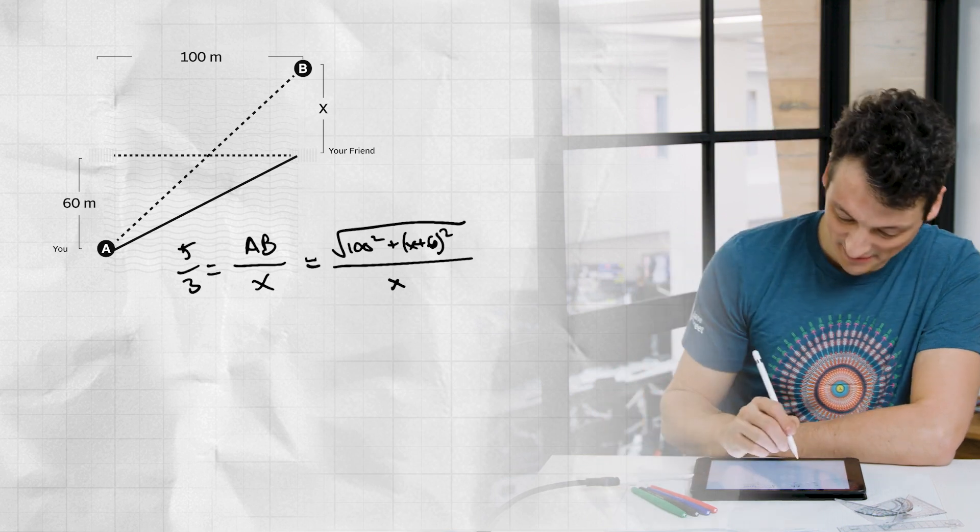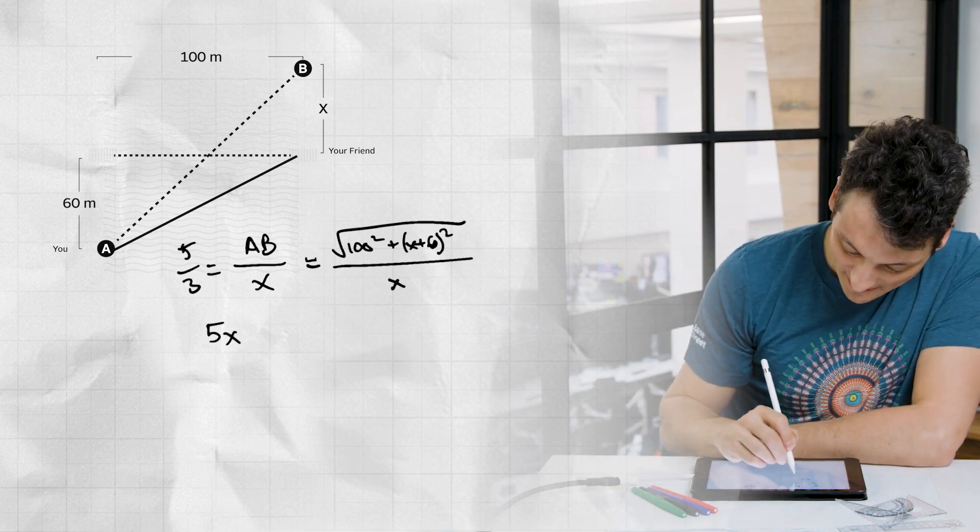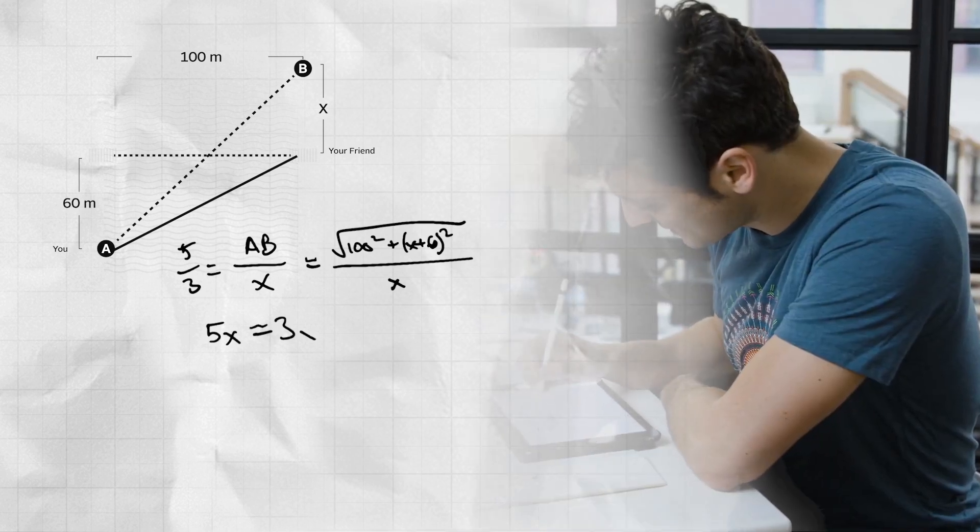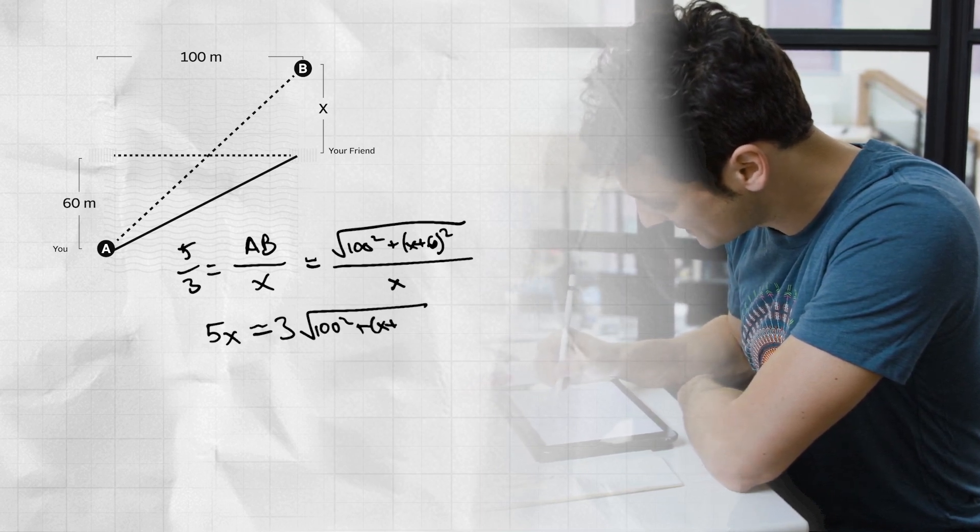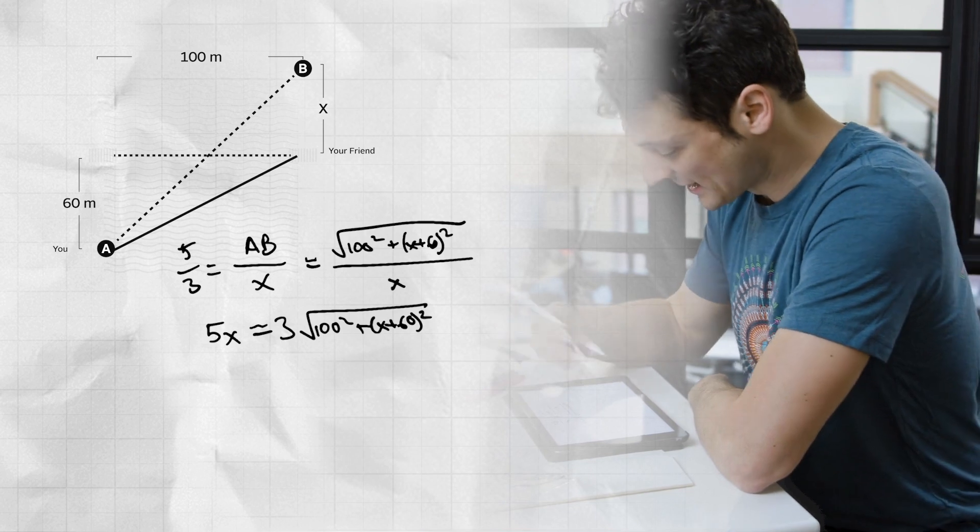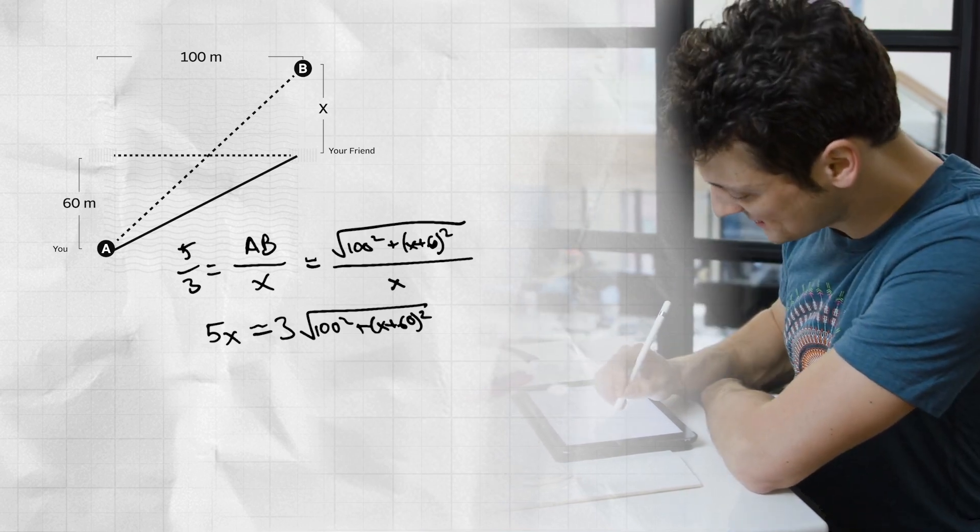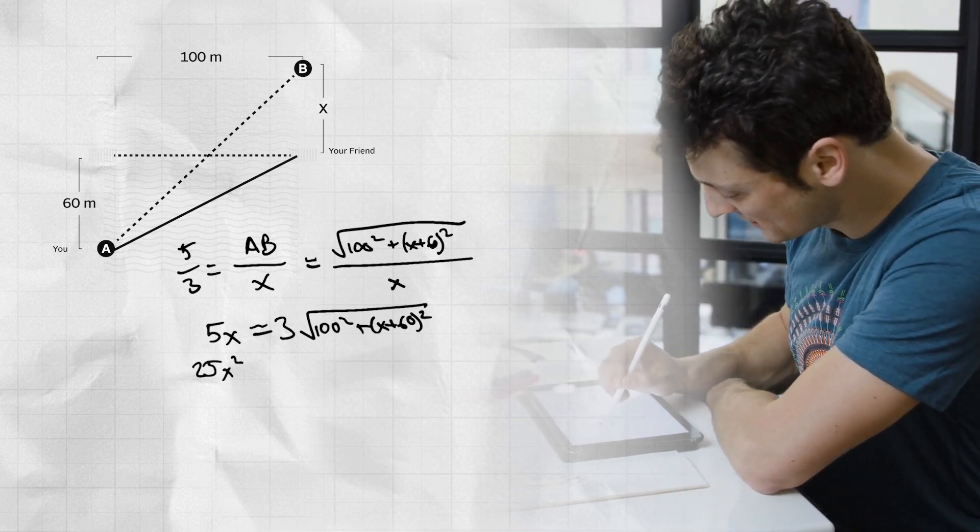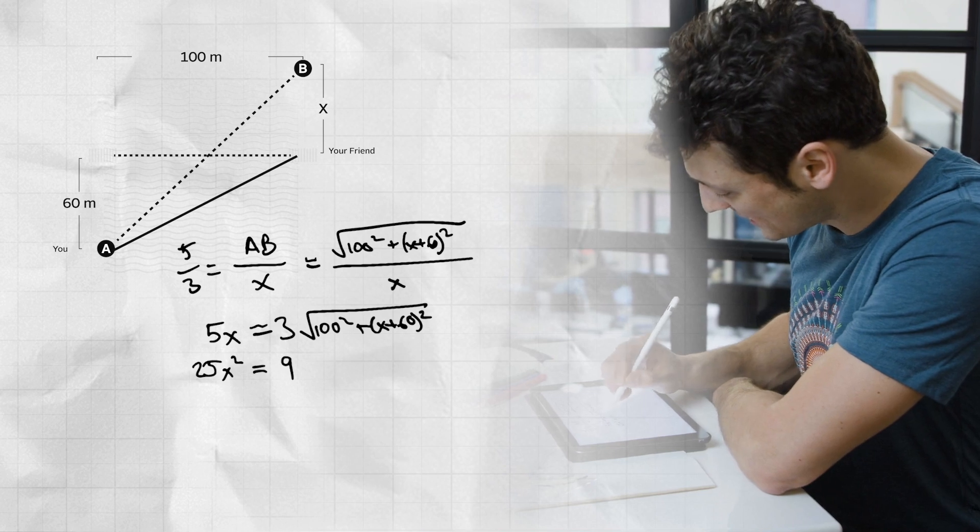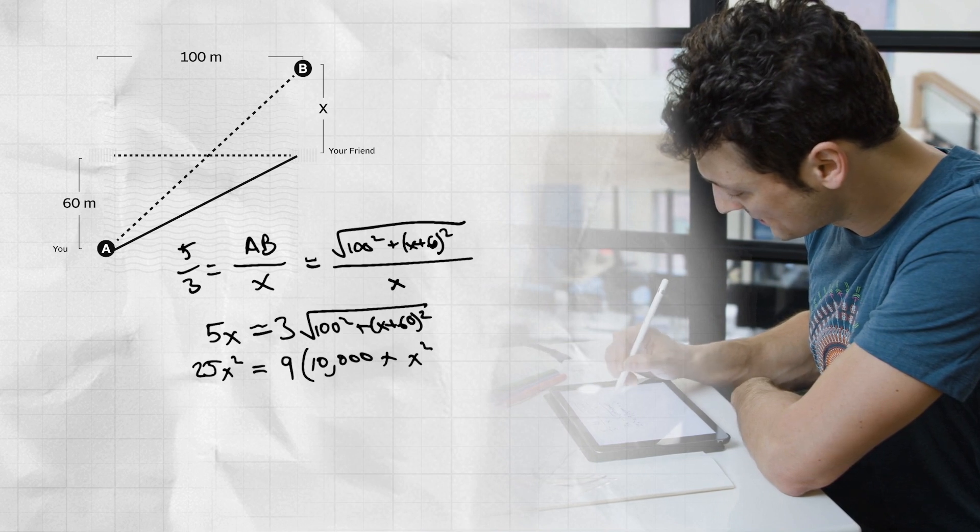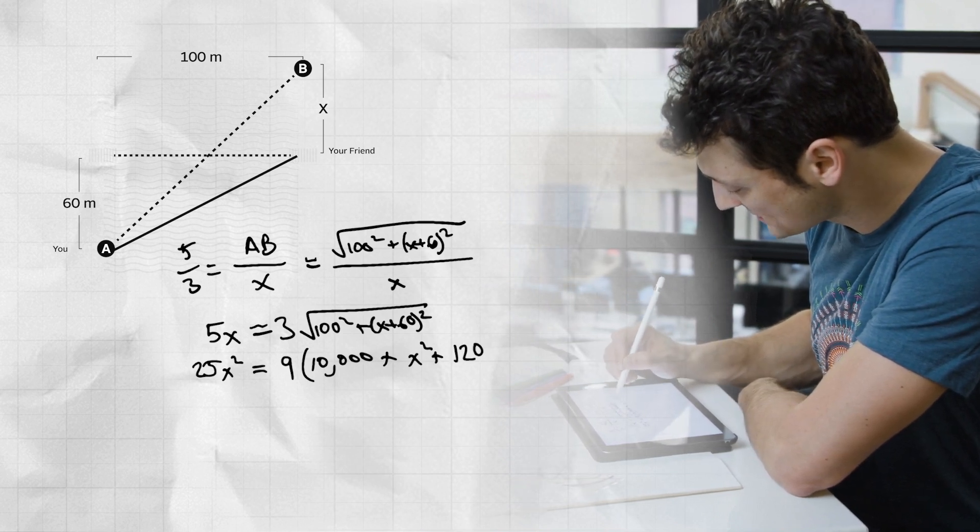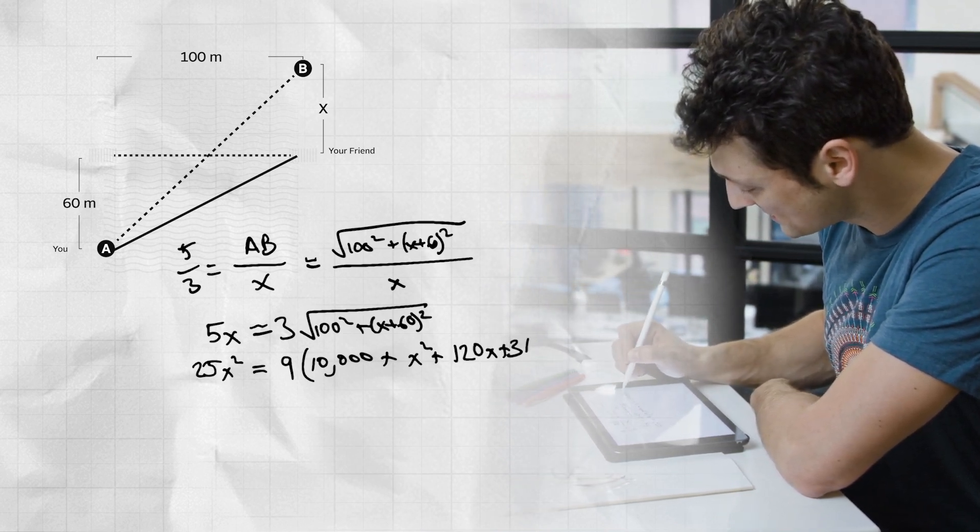Clearing denominators, we get 5x equals 3 times the square root of 100 squared plus x plus 60 quantity squared. And squaring both sides gives 25x squared equals 9 times 10,000 plus x squared plus 120x plus 3,600.